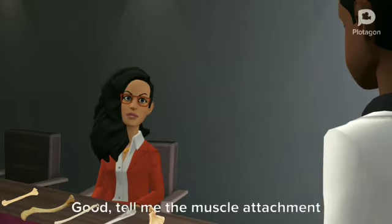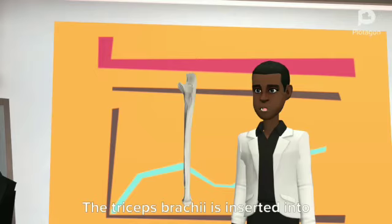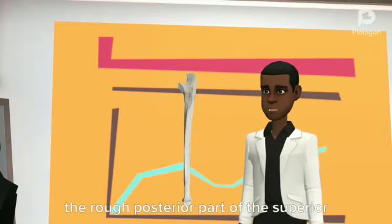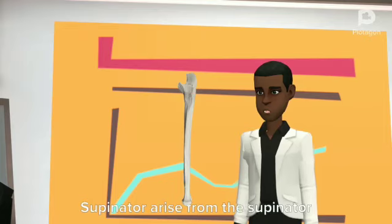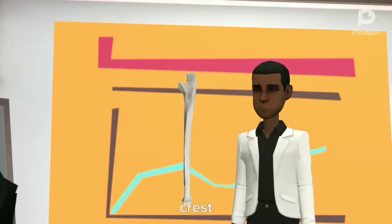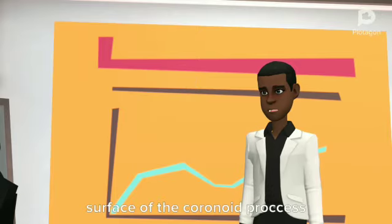Good, tell me the muscle attachment of triceps brachii, brachialis and supinator muscles. The triceps brachii is inserted into the rough posterior part of the superior surface of the olecranon. Supinator arises from the supinator crest. Brachialis is inserted into the anterior surface of the coronoid process.